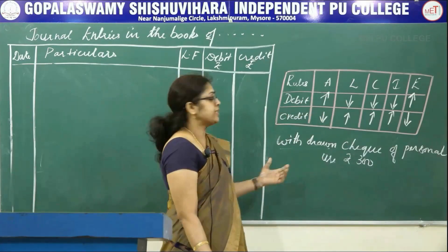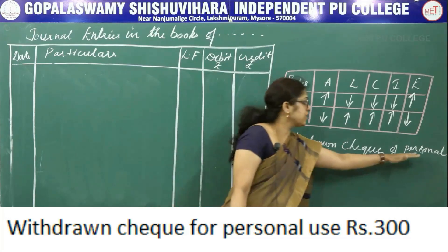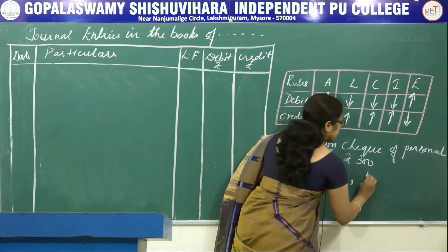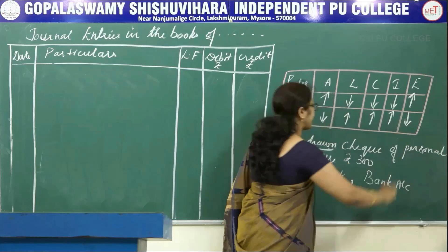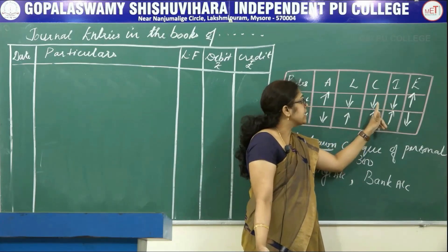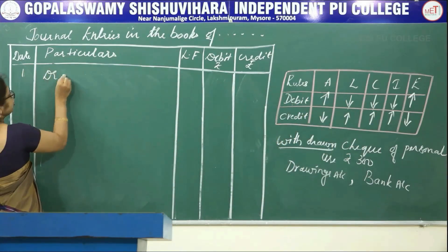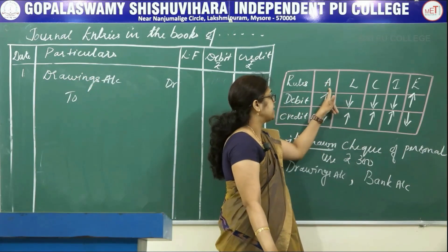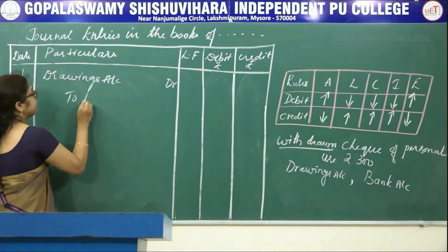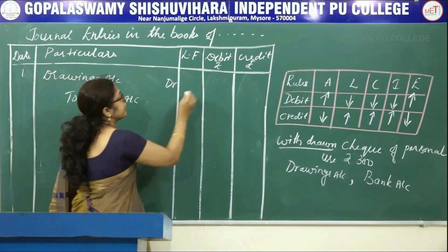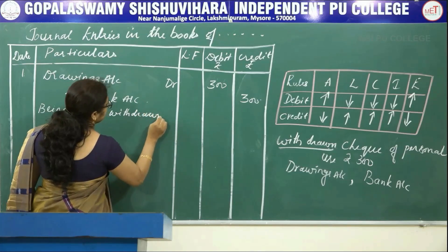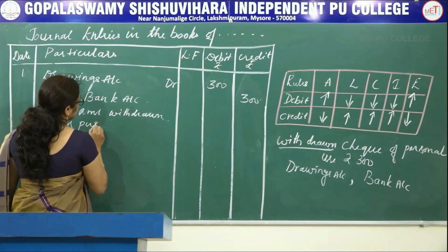Withdrawn check for personal use. The two accounts involved are: one is drawings account, and the other is bank account — because check means bank account. Drawings comes under capital. When the amount is withdrawn, capital reduces, means it has to be debited. So, debit the drawings account. Bank comes under asset. If amount is withdrawn from bank, asset reduces. When asset reduces, it has to be credited. So, credit the bank account amounted to rupees 300, being amount withdrawn for personal use from bank.